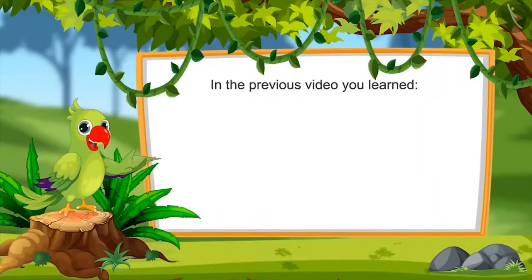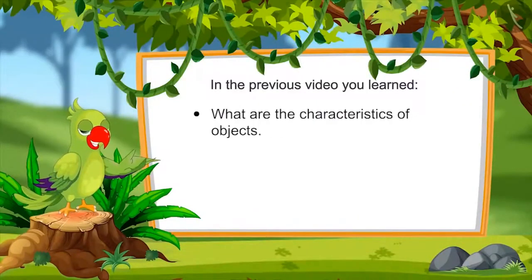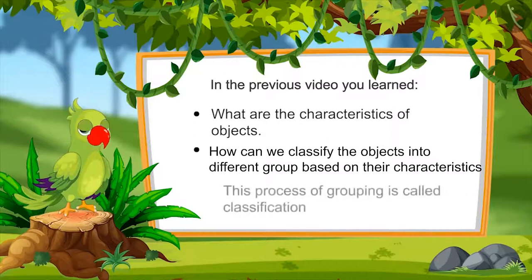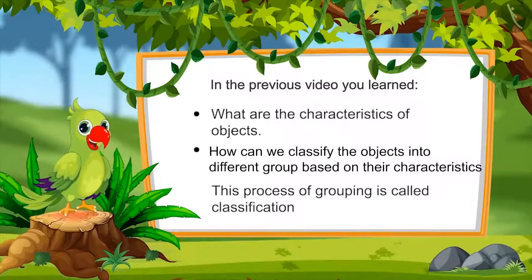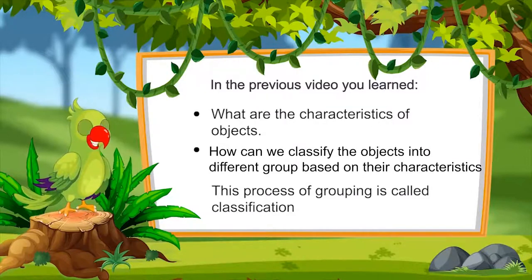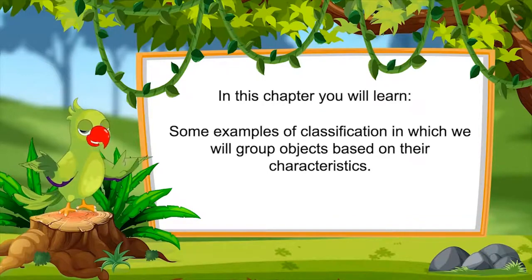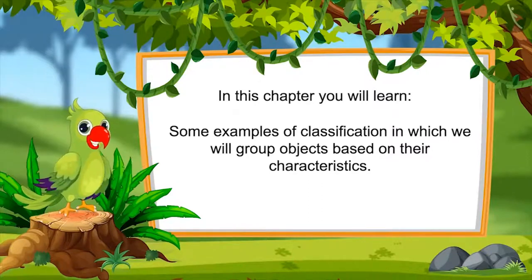Children, in the previous video, you have learnt what are the characteristics of objects and, on the basis of characteristics, how we can classify objects and make different groups of them. You also learnt that this process of grouping based on characteristics is called classification. In this video, we will see some examples of classification in which we will group objects based on their characteristics.